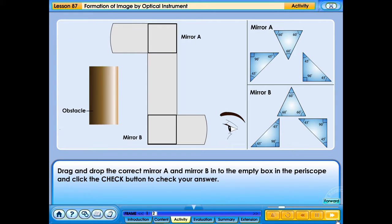Drag and drop the correct mirror A and mirror B into the empty box in the periscope and click the check button to check your answer. Your answer is correct.